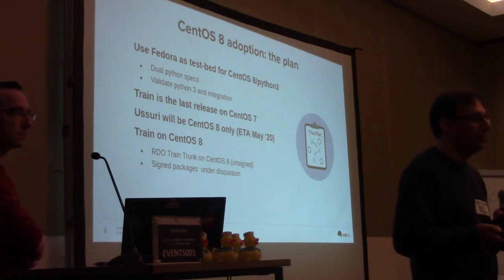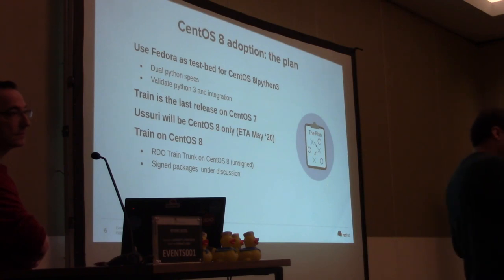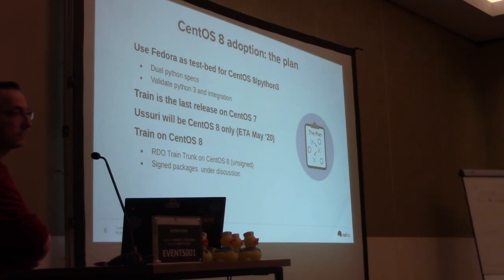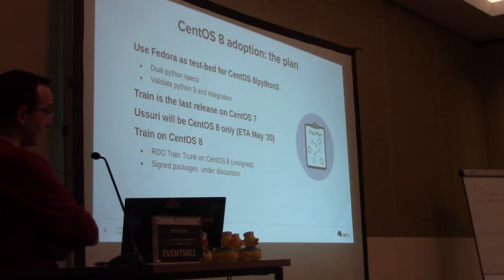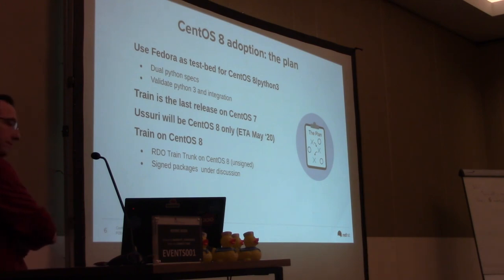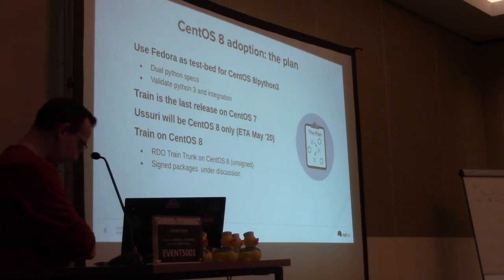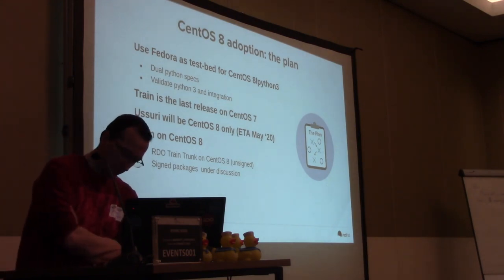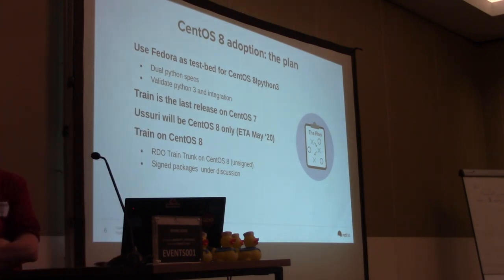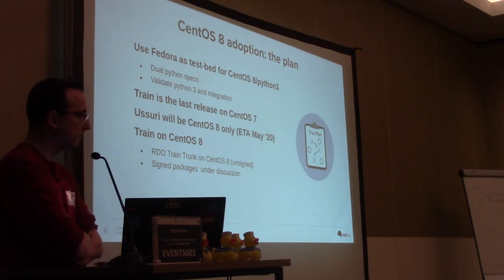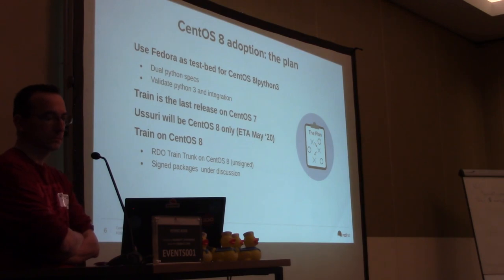One idea is easier migration — Train to Train. You have Train on CentOS 7, you add nodes with Train on CentOS 8, and you just migrate Train to Train. That way you don't have to worry about changes between OpenStack versions. The idea is it can be helpful to do one change at a time, instead of doing two changes together — moving to a different major version of OpenStack and CentOS 8 simultaneously. We are providing a path to just migrate to CentOS 8 while staying on the same OpenStack version.